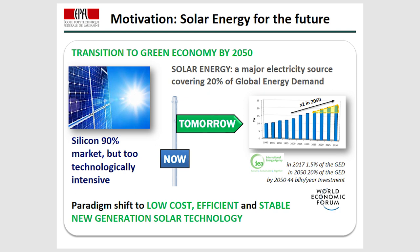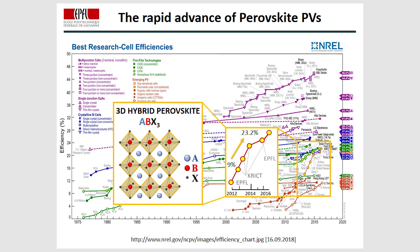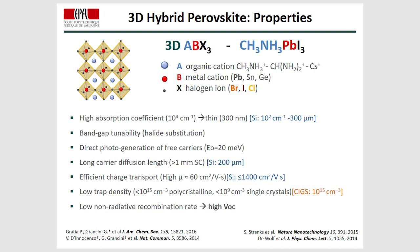After the nice introduction in the previous talk, I will just give some general words. If we look at the best research cell efficiencies, we can see how in the last few years the 3D hybrid perovskite has dominated. After only eight years of research, efficiencies of devices based on this material have reached more than 23%. These 3D hybrid perovskites are formed by three different components: the A, which is a carbon organic cation, typically methyl ammonium, formamidinium, or cesium.